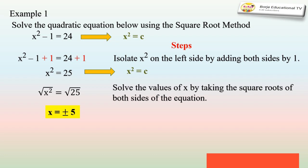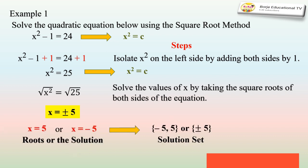The square root of x² is x, and the square root of 25 — since it is a perfect square — is equal to ±5. Therefore, the roots of the equation x² - 1 = 24 are x = 5 or x = -5, which can also be written as a solution set.